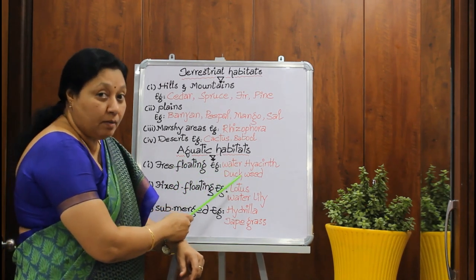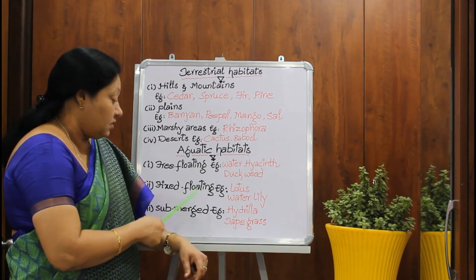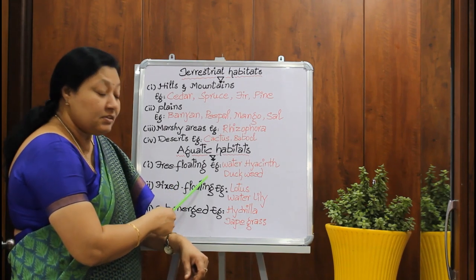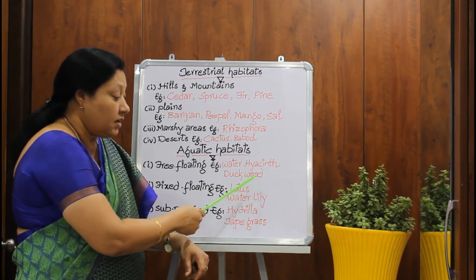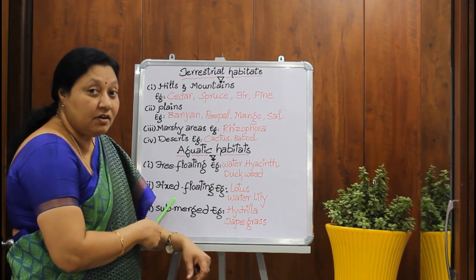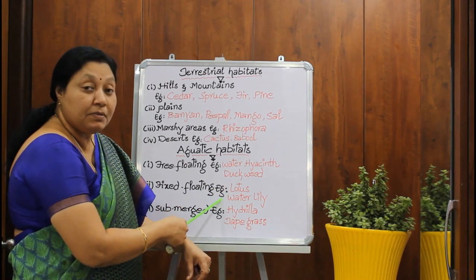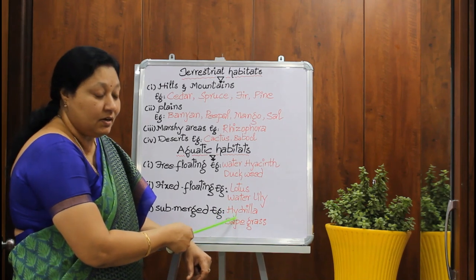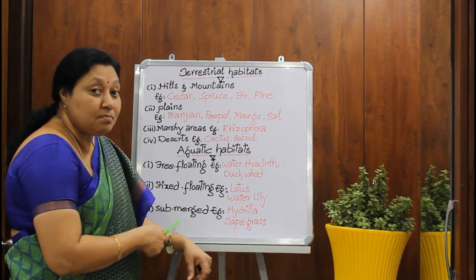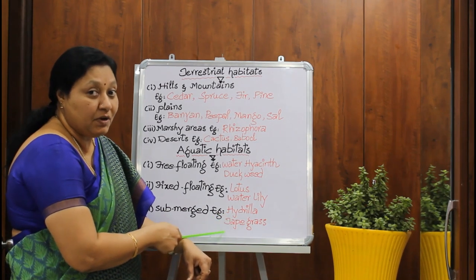Based on their aquatic habitats, plants are of three groups. The first one are free-floating plants — examples: water hyacinth and duckweed. The second category are the fixed-floating plants — examples: lotus and water lily. And the third one are the submerged plants — examples: hydrilla and tape grass.